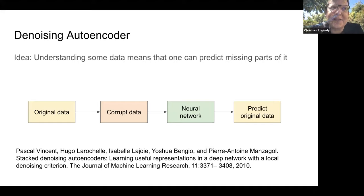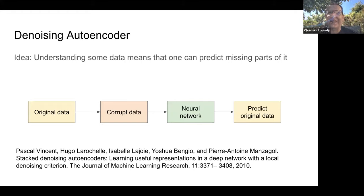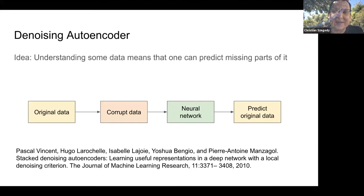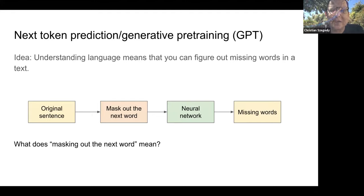This is a very powerful idea because it's super applicable in many contexts — it gives you a frame of reference, and then you can design tasks. You don't need deep expertise in neural network architecture design or mathematics; you just need intuition about what is a useful task to solve. We are slowly becoming teachers to neural networks. For example, next token prediction — called generative pre-training in some circles, and GPT is an example of that — is also based on the same ideas.